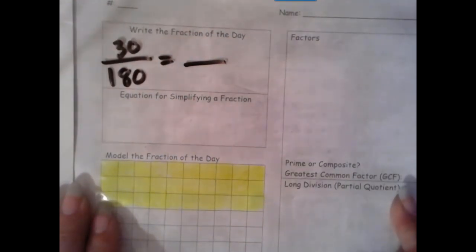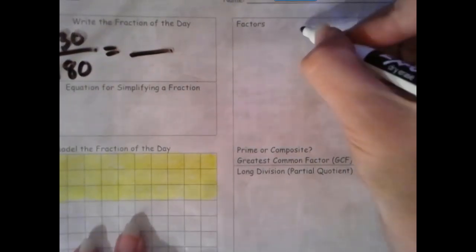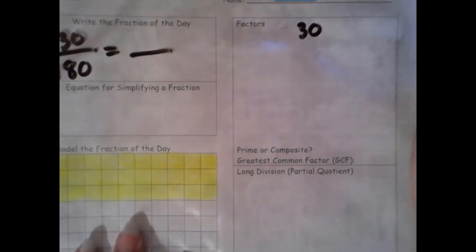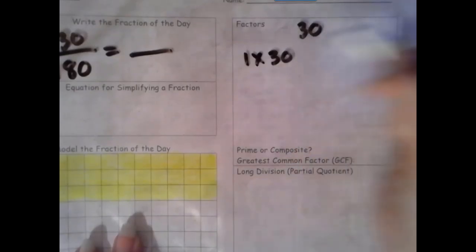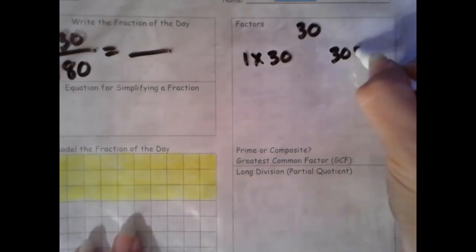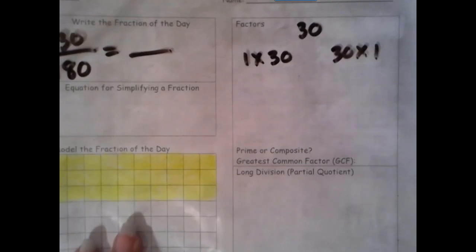So let's find our factors of our numerator. Two factors we always know are 1 and the number itself. And then using the commutative property of multiplication, I can do 30 times 1.